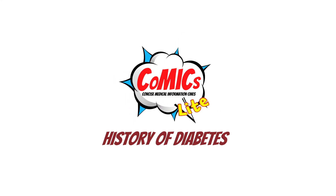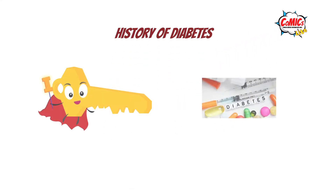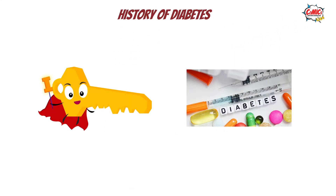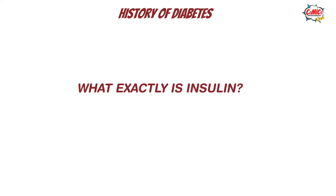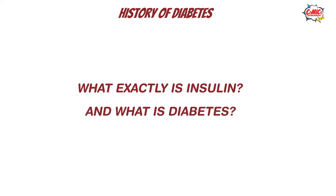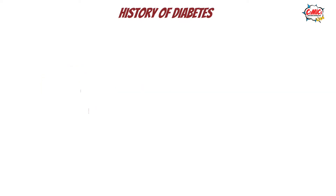We have all heard about diabetes and insulin. What many of us don't know is that insulin was discovered almost exactly a hundred years ago from this date. So what exactly is insulin, and what is diabetes, the disease it is used to treat?